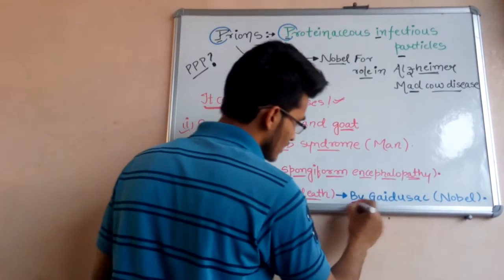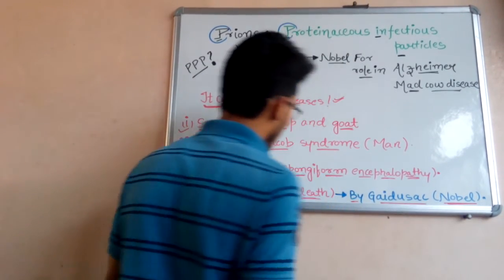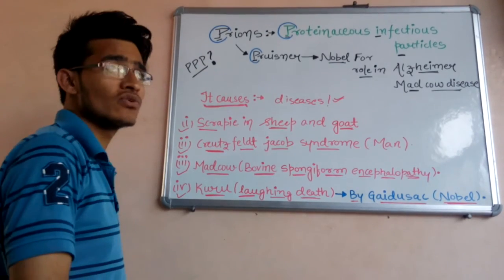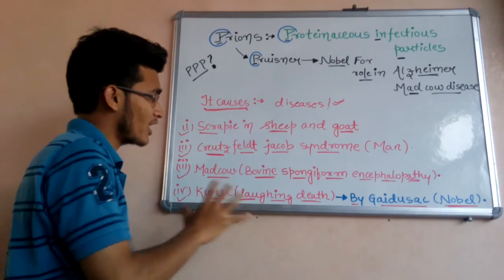The disease kuru was discovered by Gajdusek, who was awarded with a Nobel Prize for discovering the disease kuru. So this is all about prions and the diseases caused by prions.